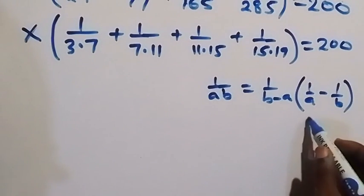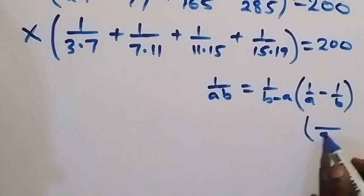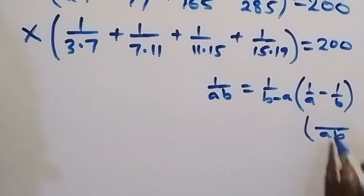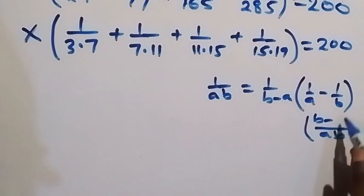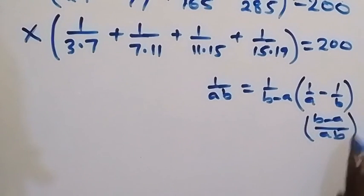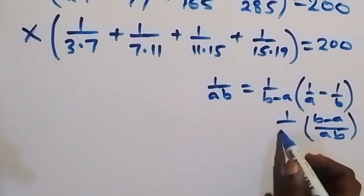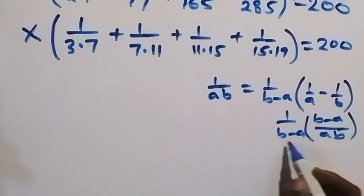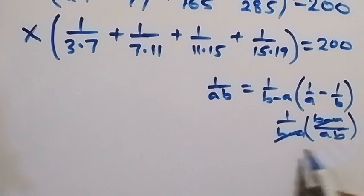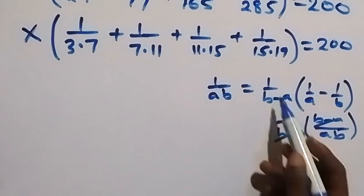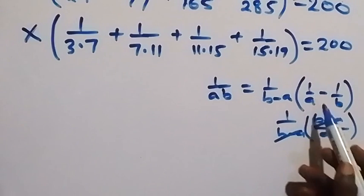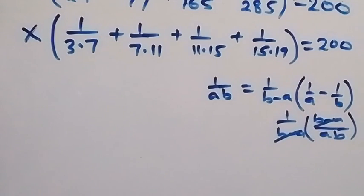Because from here, by the time we find the LCM, the LCM is AB. And A goes into AB giving B, times 1 over B; minus B goes into AB giving A, times 1 over A. Then we multiply by (B minus A), and we discover that (B minus A) cancels, leaving us with 1 over AB. So instead of writing 1 over AB, let's write 1 over (B minus A) into bracket (1 over A minus 1 over B).